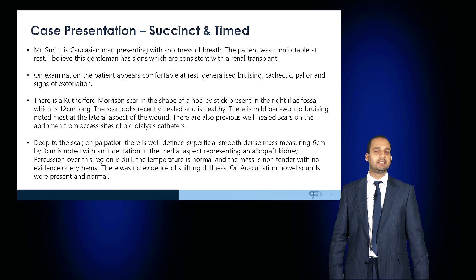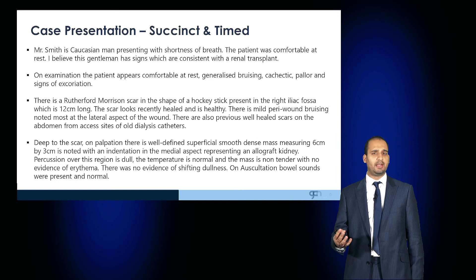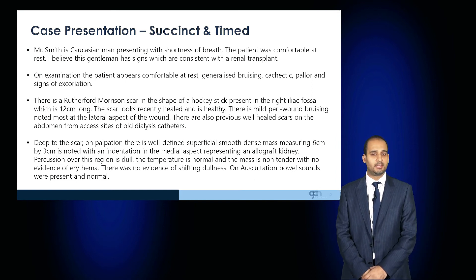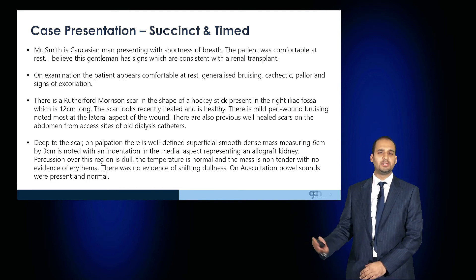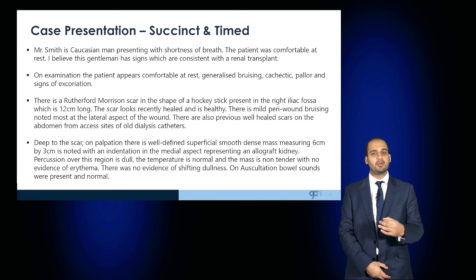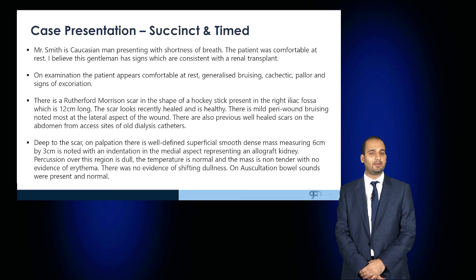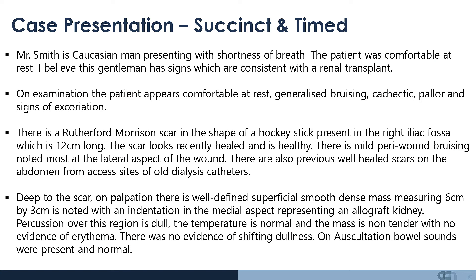Putting this together: Mr. Smith is a Caucasian man presenting with shortness of breath. The patient was comfortable at rest and I believe the gentleman has signs consistent with a renal transplant. On examination, the patient appears comfortable at rest with generalized bruising, cachexia, and pallor with signs of previous excoriation. There's a Rutherford-Morrison scar in the shape of a hockey stick present in the right iliac fossa, which is 12 cm long. The scar looks healthy, recent, and well-healed, with mild peri-wound bruising at the lateral aspect. There are also some previous well-healed scars on the abdomen from access sites or dialysis catheters. Deep to the scar on palpation, there's a well-defined superficial smooth dense mass measuring 6 cm by 3 cm with an indentation in the medial aspect, representing an allograft kidney. Percussion over the region is dull, the temperature is normal, and the mass is non-tender with no evidence of erythema, no evidence of shifting dullness, and on auscultation, normal bowel sounds were present.